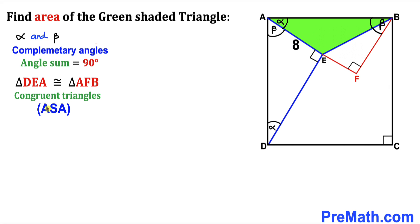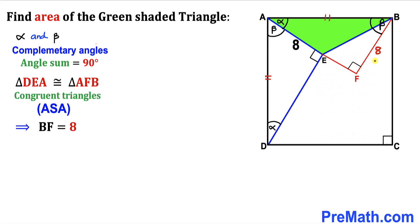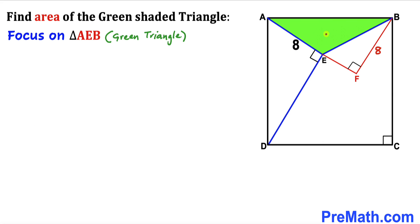Since ABCD is a square and in triangle DEA the side opposite angle alpha is 8 units, the side opposite angle alpha in triangle AFB must also be 8 units. Therefore, side length BF turns out to be 8 units.